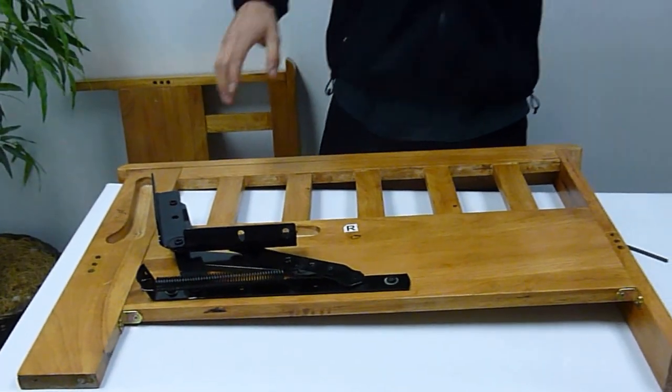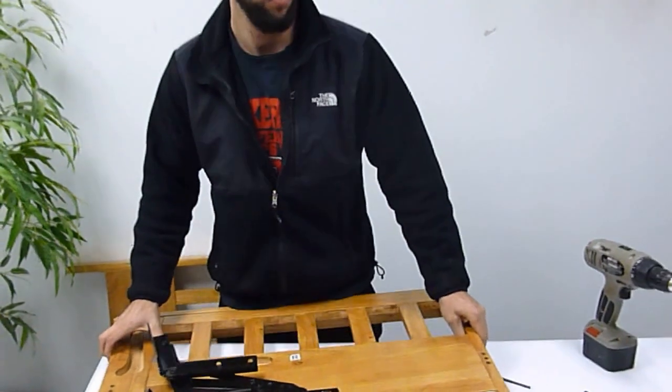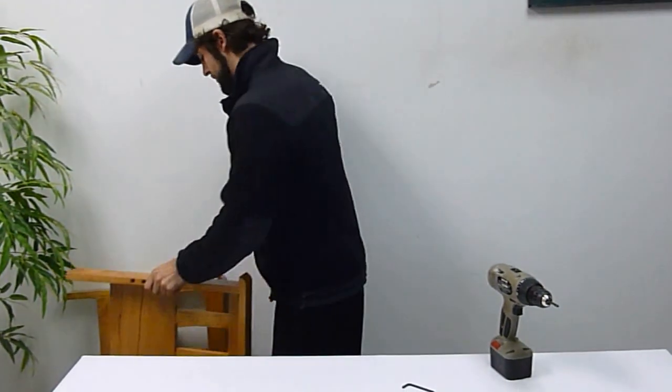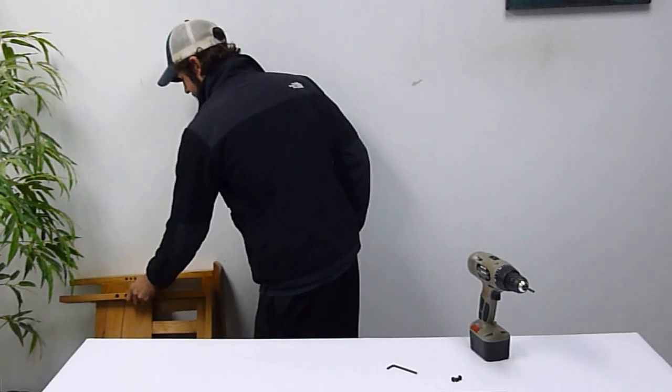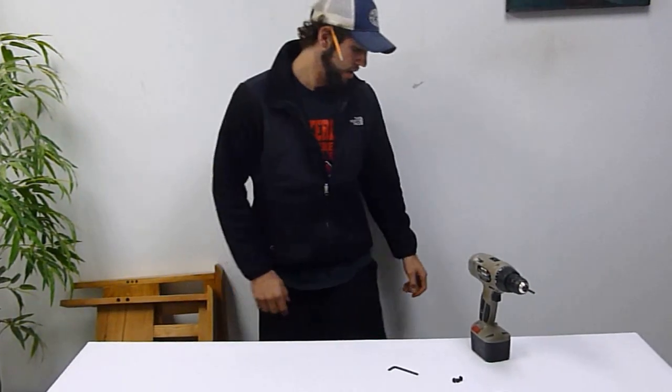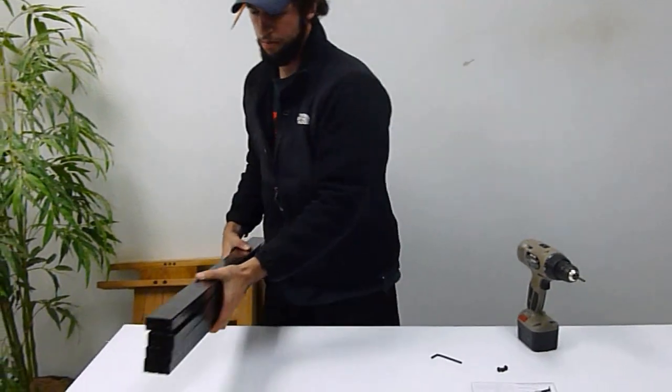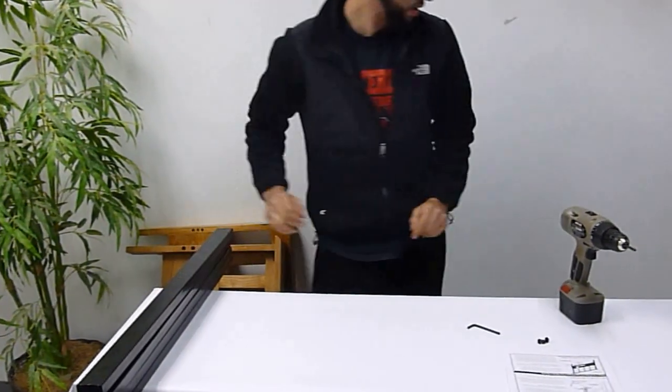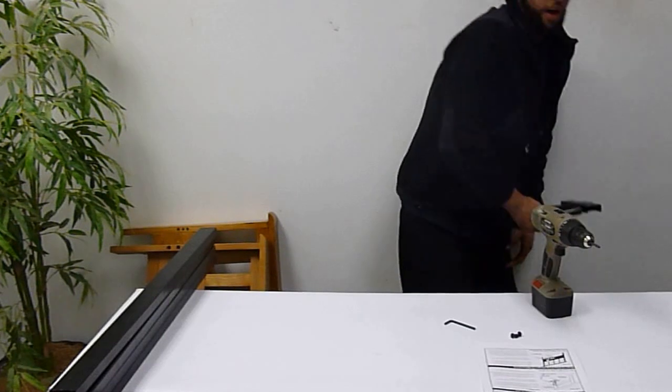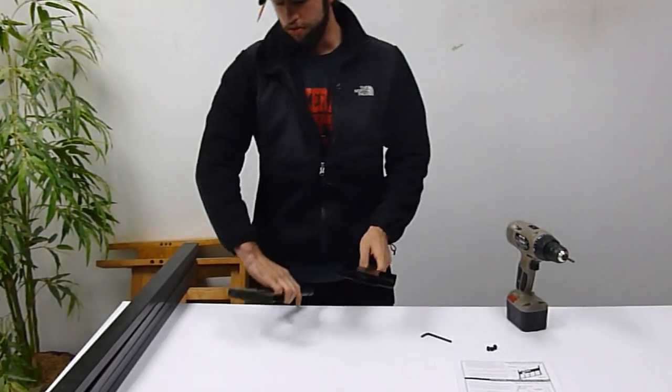Alright, now that's complete, we're going to move on to step two here. This is going to be assembling your stretcher rails. Now your stretcher rails are the four long metal pieces that come with your grid. So you're going to need those, and you're also going to need these T-connectors.